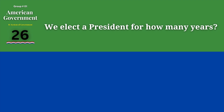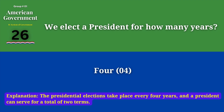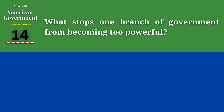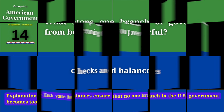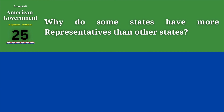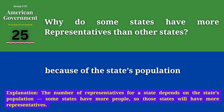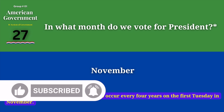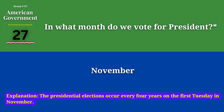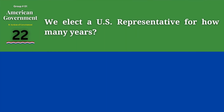We elect a president for how many years? 4. What stops one branch of government from becoming too powerful? Checks and balances. Why do some states have more representatives than other states? Because of the state's population. In what month do we vote for president? November. We elect a U.S. representative for how many years? 2.